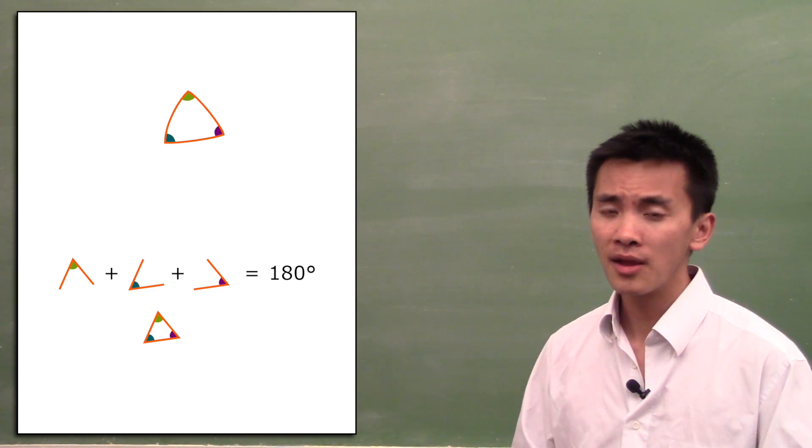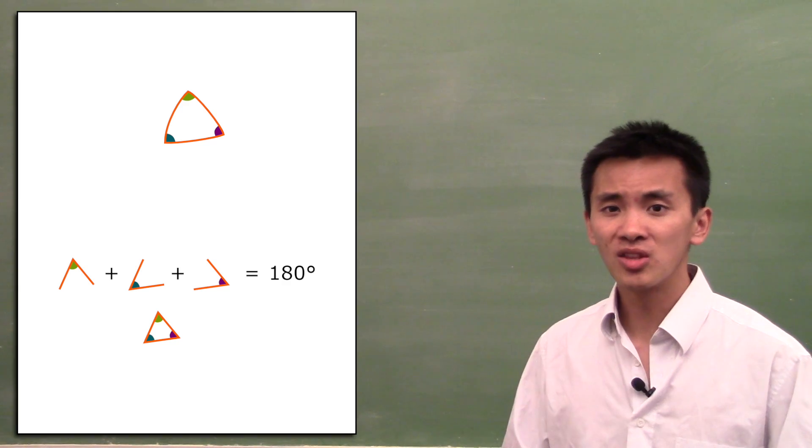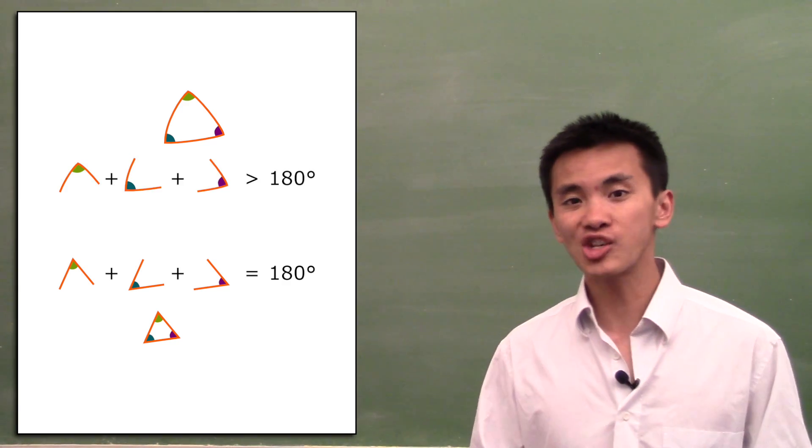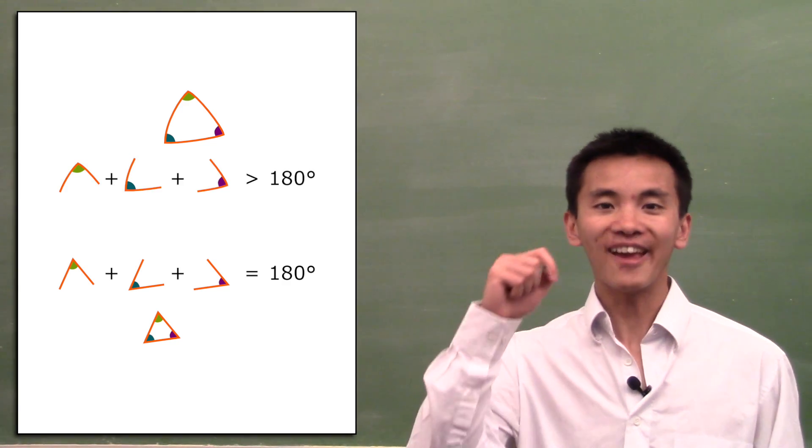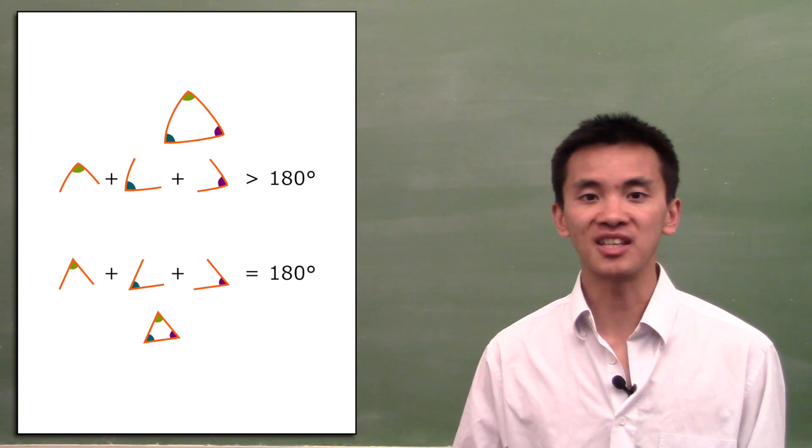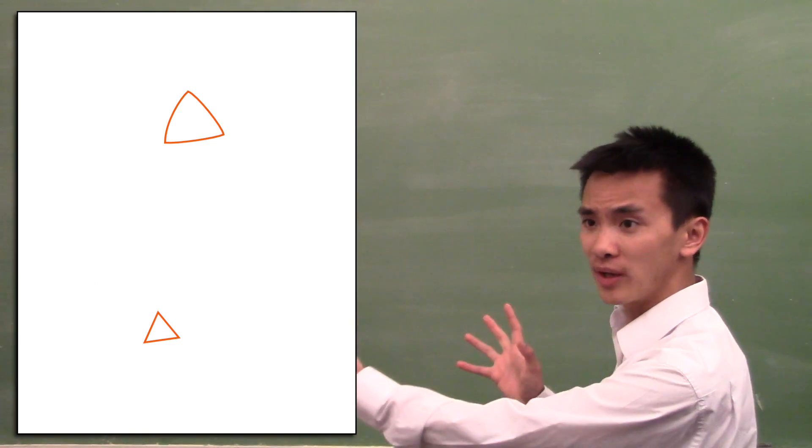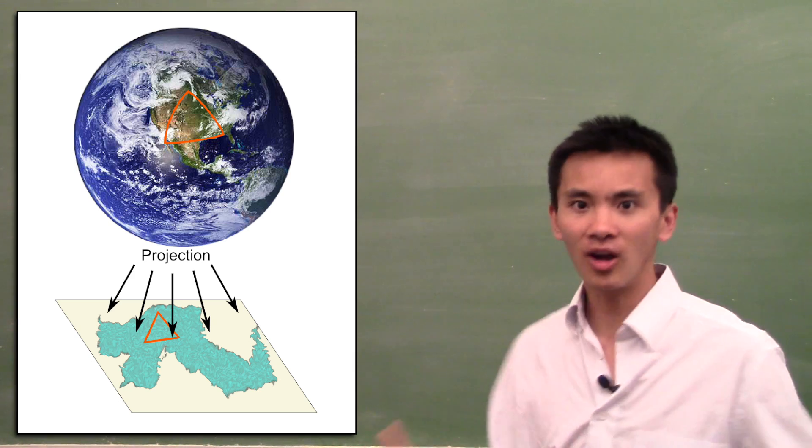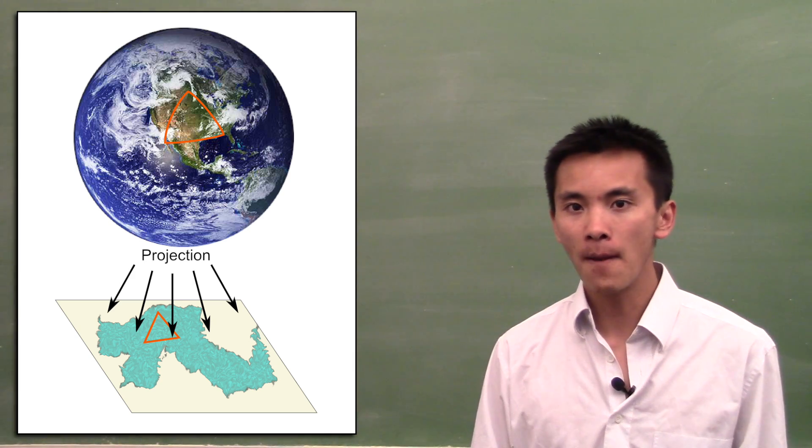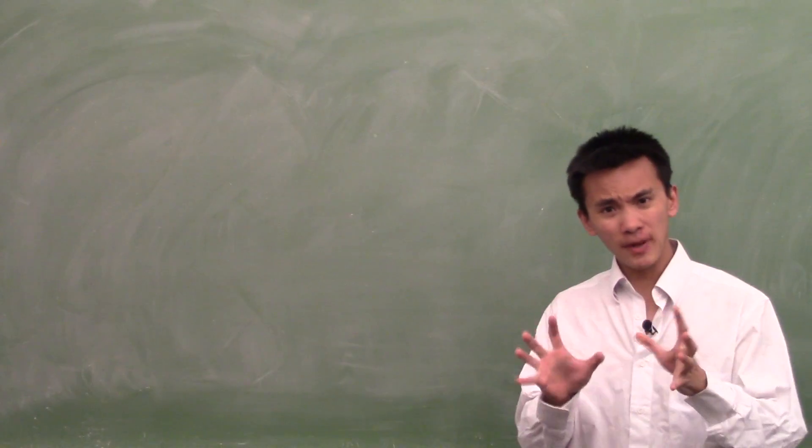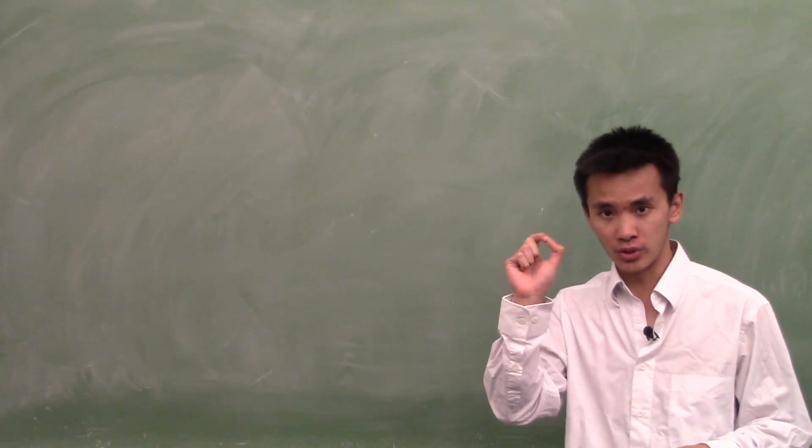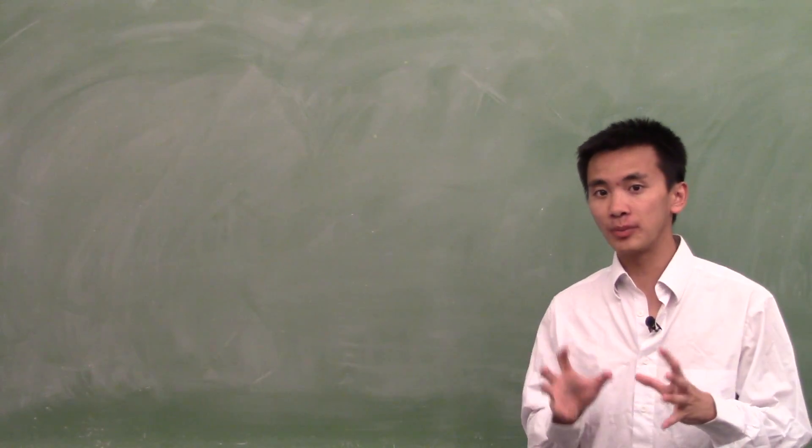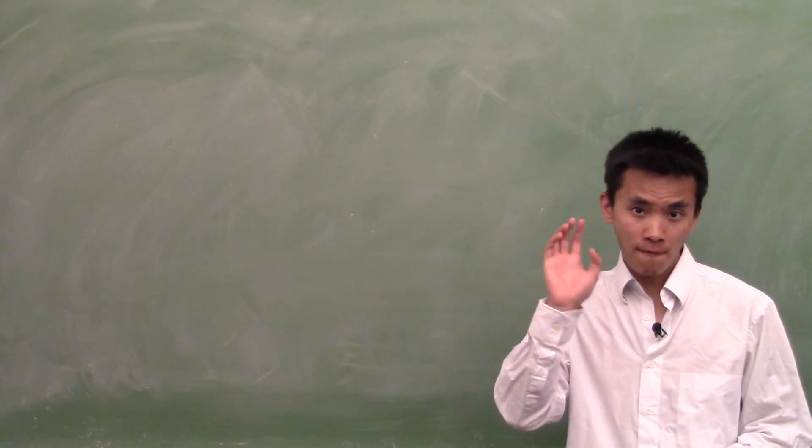But on the Earth, Gauss found out that the sum of the angles of any triangle on the Earth always exceed 180 degrees. But then we have two triangles, and if the map is perfect, they're supposed to be the same. Well they're not, so the map cannot be perfect.